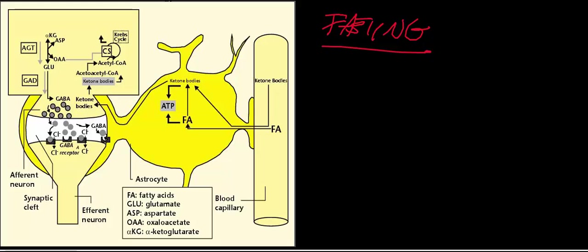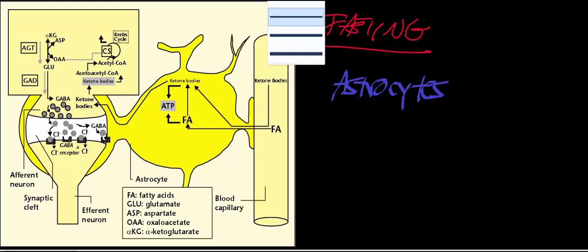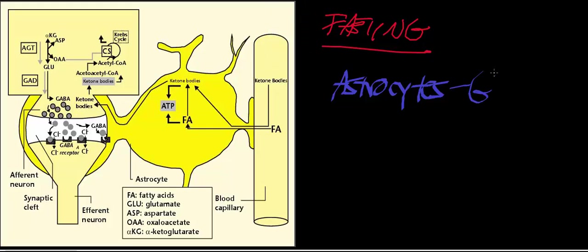We're going to talk about astrocytes. If you're not familiar with what an astrocyte is, an astrocyte is something we refer to as a glial cell. Glial cells are supporting cells of the nervous system, in both the central and peripheral.